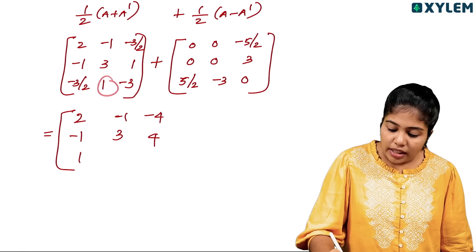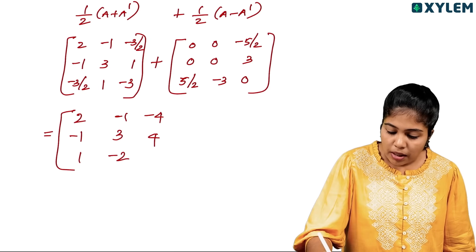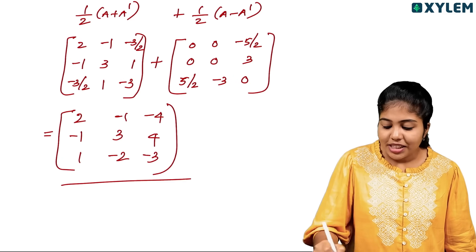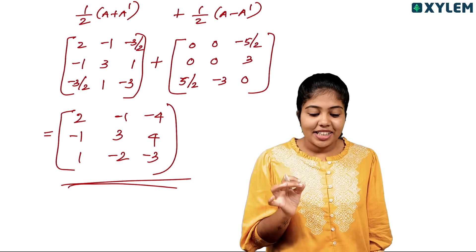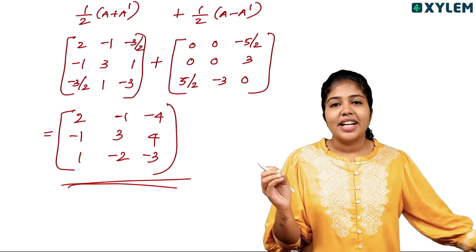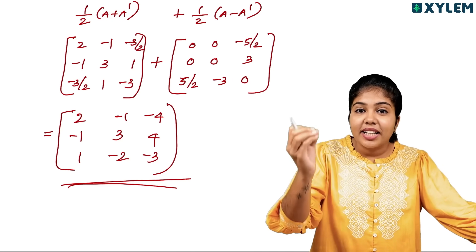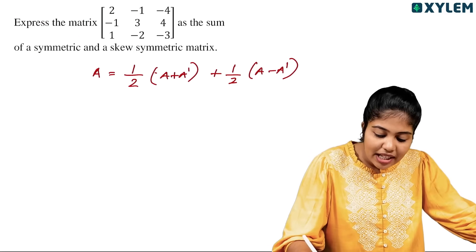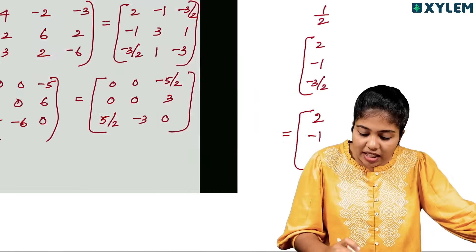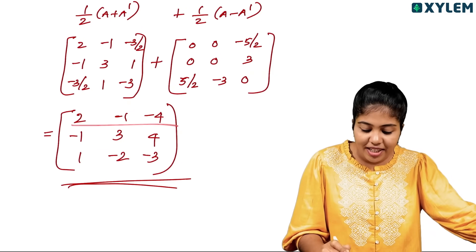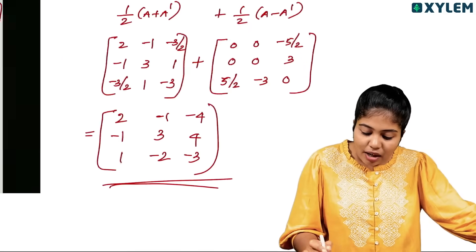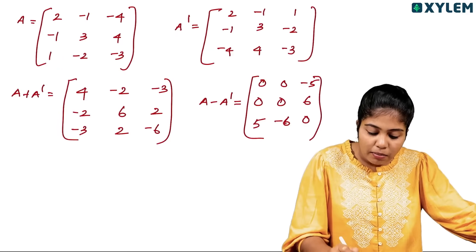Then 1 plus minus 3 is minus 2. Then minus 3 plus 0 is minus 3. The matrix [2, -1, -4; 1, -2, -3] is verified. This is due to half of A transpose plus half of A transpose giving back the original matrix.